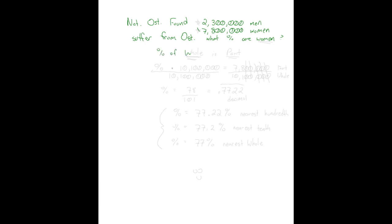So the percent of the whole is the part. Well, this gets us our first problem, because the percent is what we're looking for, but I want the whole amount. Well, I don't have the whole amount. I have men and I have women, but all people would be the whole amount. So I have to add those two things together. And when I add those together, I get 10,100,000 people with osteoporosis in the country. And that is,